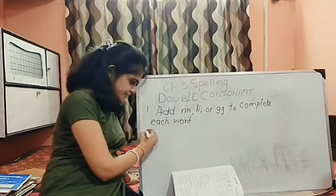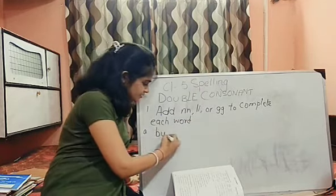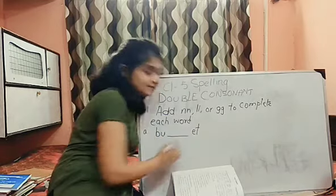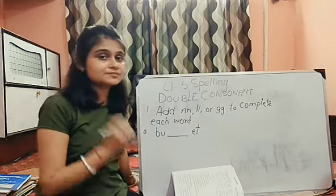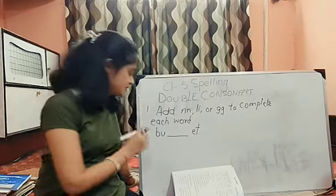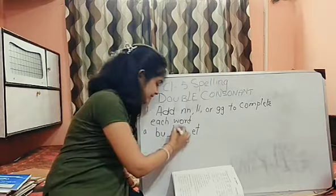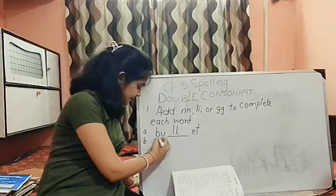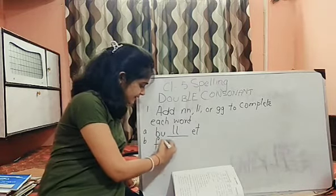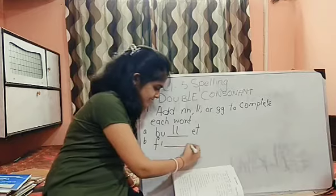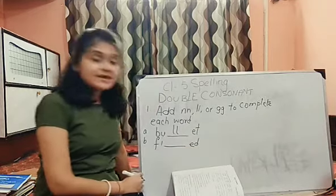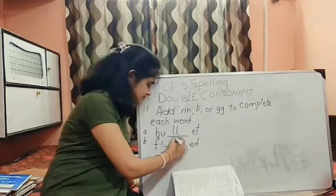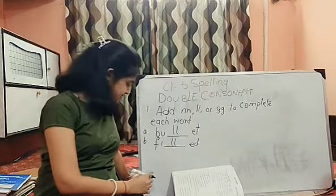First one: B U dash E T. We can write double L to make it bullet — B U double L E T. Then number B: F I dash E D. F I double L E D. Filled.